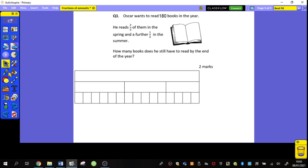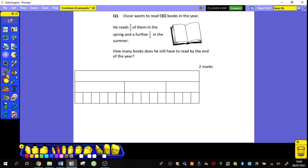The first thing I need to do is highlight the key information in the problem. Oscar wants to read 180 books in the year. So there is my whole, 180 books.